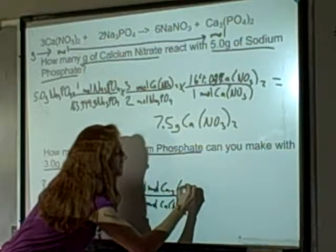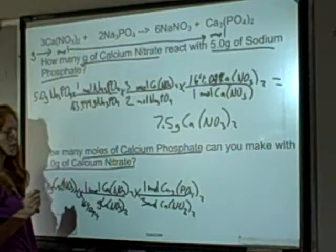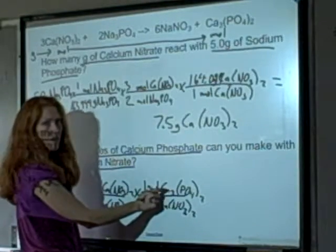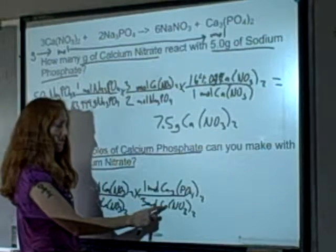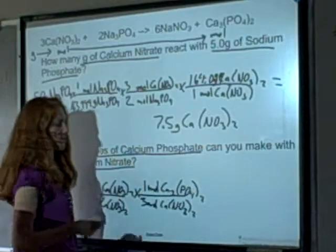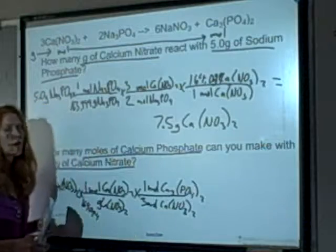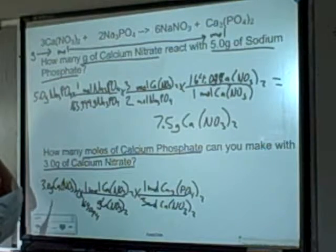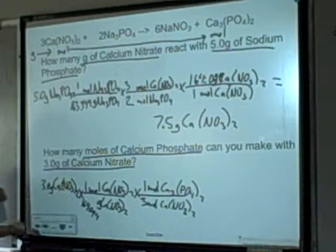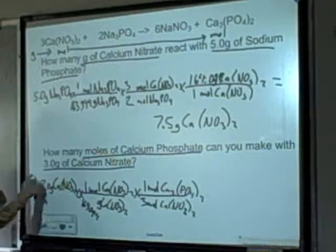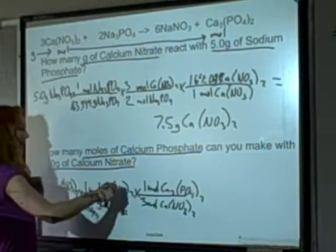Calcium nitrate goes on the bottom because I have that unit up top. It makes sense that 3 moles are needed to make 1 mole of calcium phosphate, because every mole of calcium nitrate is just Ca(NO3)2 — just 1 calcium — and every mole of calcium phosphate is Ca3(PO4)2, which has 3 calciums. So I need 3 calcium nitrates. 3 grams of calcium nitrate divided by 164.094...